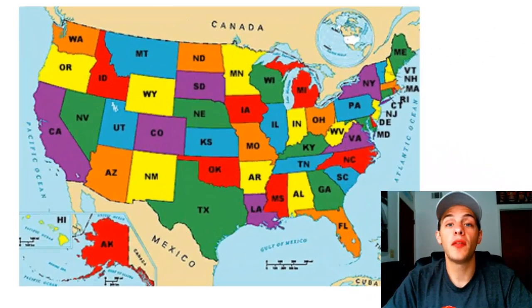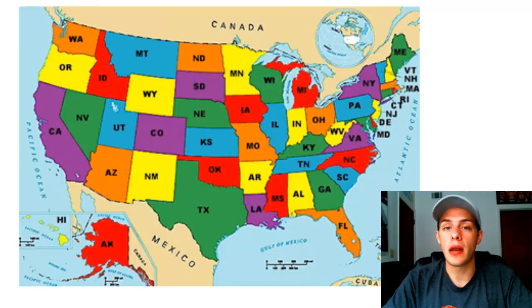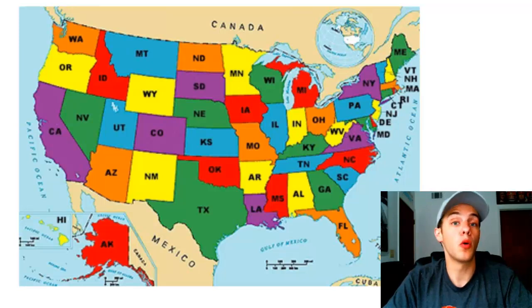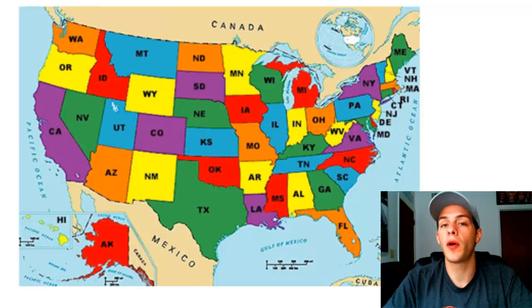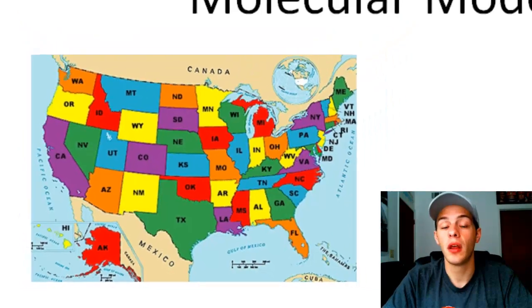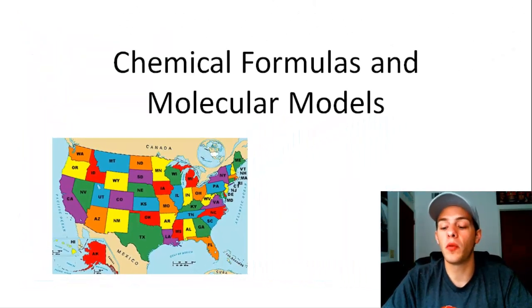This is a map of the United States of America, which is my home country. The USA is divided into 50 territories called states, and each state has its own unique two-letter abbreviation. These abbreviations are quite useful because they're short and easy to use, especially when dealing with long-winded state names like Massachusetts or California. Sometimes it's just as useful to use the state's two-letter abbreviation. This is basically the same way that chemical formulas work.